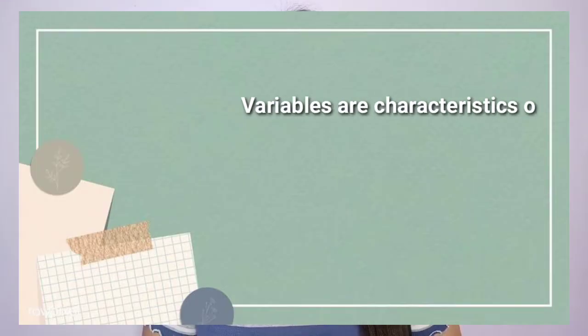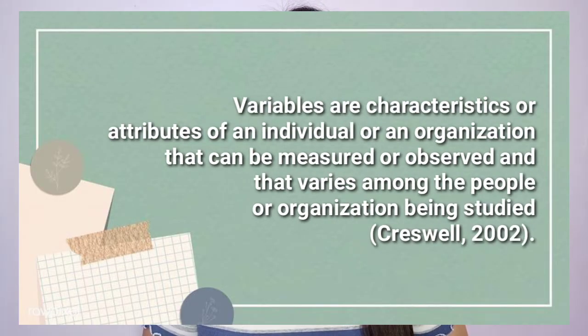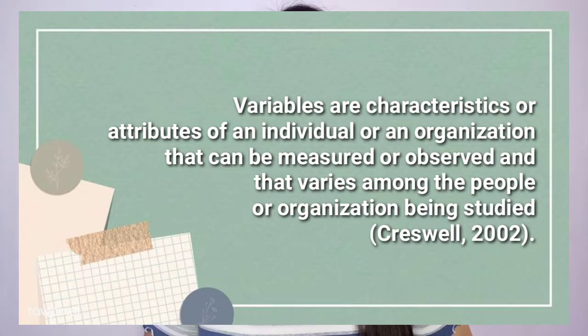Moreover, some variables can have five attributes like the five-point scale of agreement wherein five is strongly agree, four is agree, three is undecided, two is disagree, and one is strongly disagree. For frequency of use, we have five always, four oftentimes, three sometimes, two rarely, and one never. Additionally, Cresswell (2002) defined variables as characteristics or attributes of an individual or an organization that can be measured or observed and that varies among the people or organization being studied.